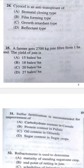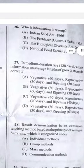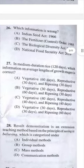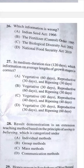Question 26: Which information is wrong? The Fertilizer Control Order was established in the year 1957, so option B is the wrong statement.